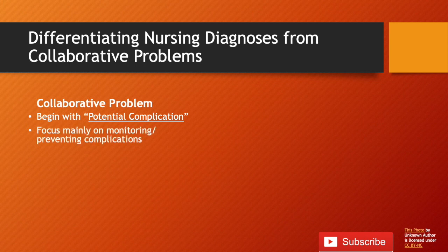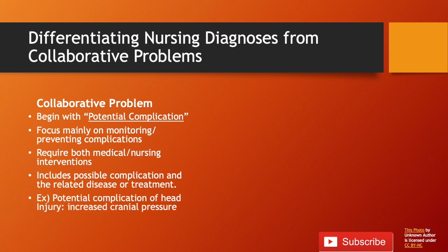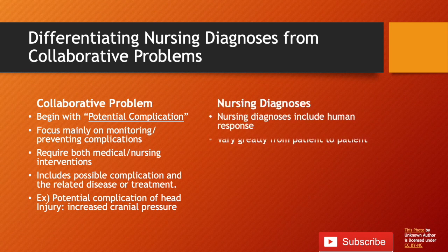Let's differentiate nursing diagnoses from collaborative problems. A collaborative problem begins with the words 'potential complication' and focuses on monitoring and preventing complications, requiring both medical and nursing interventions. An example is: potential complication of head injury — increased cranial pressure. Unlike nursing diagnoses, which vary greatly from patient to patient, the potential complications related to an injury are similar among all patients with that injury.